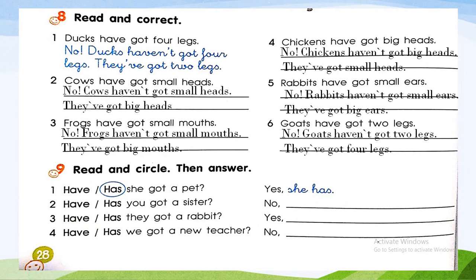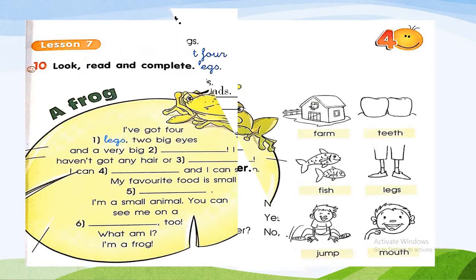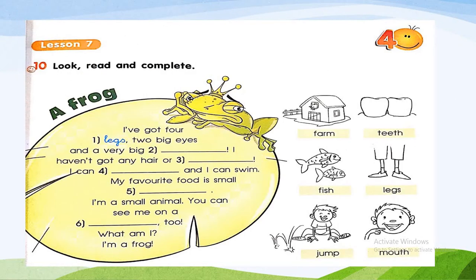Good, dear students. Number two: 'Have you got a sister?' No, I haven't. Number three: 'Have they got a rabbit?' Yes, they have. Number four: 'Have we got a new teacher?' No, we haven't. Make sure you write the answers in your activity book and prepare to go to page 29, lesson 7.